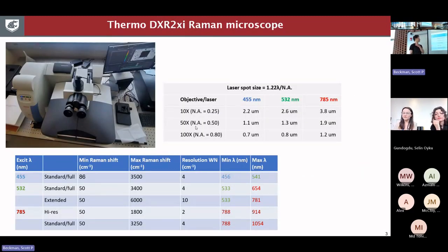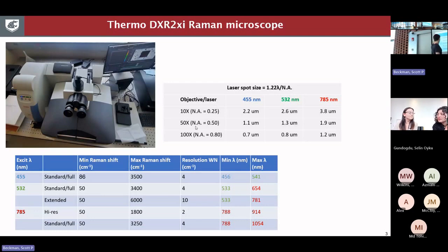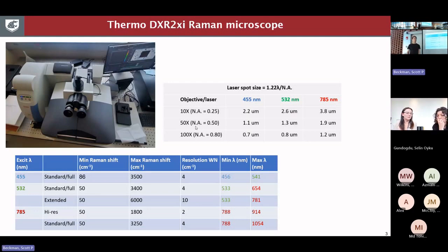This is our instrument. It's a mapping Raman microscope. We have a pretty large stage on it — maybe 100 millimeters by 100 millimeters that we can cover. We have three different excitation lasers: 455, 532, and a 785 nanometer laser. For the 532, I'm mainly using the extended range grating, which allows us to see a pretty wide range of wavenumbers. This is very useful for this luminescence technique because we can excite with a fairly high power laser at a fairly low wavelength.